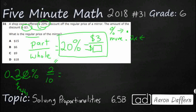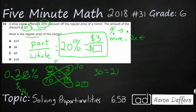So now we have two tenths equals three over our missing number — equivalent fractions — and we can use cross multiplication. Ten times three is thirty, and two times our mystery number is two times our mystery number. So thirty equals two times our mystery number. From algebra, we know we can perform the same operation on both sides of the equation and it stays balanced. So we divide both sides by two: thirty divided by two is fifteen.